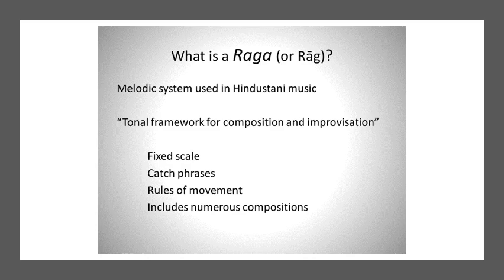So, to briefly summarize: a raga is an overarching system for composition and improvisation. Underneath the raga you have compositions that are the basis for improvisation. Unlike keys, you won't have modulation — there will always be a base drone note, always fixed on the main note 'sa.' There are ascending and descending rules of movement, making it a very complex yet rich melodic and rhythmic system, even without harmony.